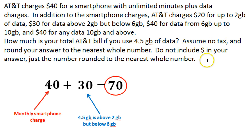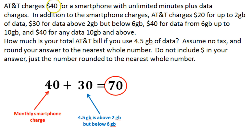It asks us not to include the dollar sign in our answer, so 70 would be our answer. Basically, we just figure out how much data we use, figure out where that falls in — whether it's $30 or $40 — then we add that to the basic plan for unlimited minutes to give us our total.